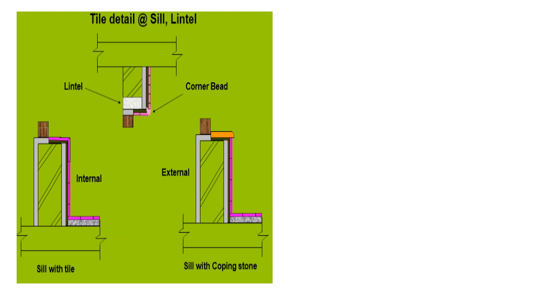The detail at sill and lintel. At the lintel, how the corner bead has to be fixed, everything has been shown in the drawing. Sill with a tile — how to fix the sill tiles has been shown in this drawing. Sill with a coping stone — if there is a coping stone, how the coping stone has been laid and how the further tiling has been done has been shown in this drawing in detail.